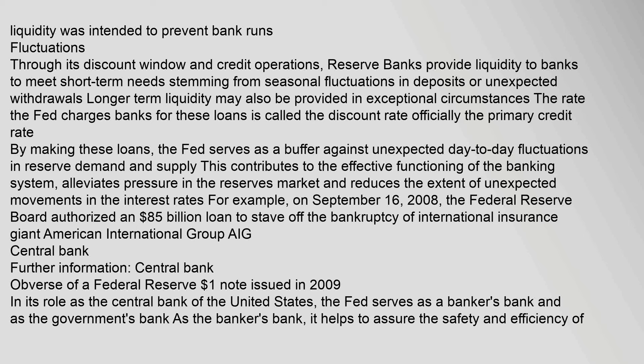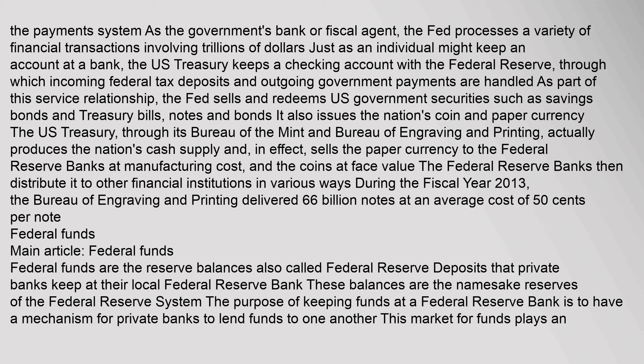In its role as the central bank of the United States, the Fed serves as a banker's bank and as the government's bank. As the banker's bank, it helps to assure the safety and efficiency of the payments system. As the government's bank or fiscal agent, the Fed processes a variety of financial transactions involving trillions of dollars. The U.S. Treasury keeps a checking account with the Federal Reserve, through which incoming federal tax deposits and outgoing government payments are handled. The Fed sells and redeems U.S. government securities such as savings bonds and treasury bills, and also issues the nation's coin and paper currency.